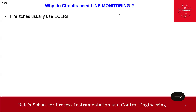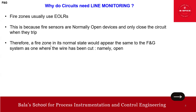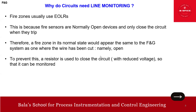Fire zones usually use the end-of-line resistor system because fire sensors are normally open devices — they only close the circuit when they trip. Therefore, a fire zone in its normal state would appear the same to the fire and gas system as one where the wire has been cut — both look like an open circuit. To address this, the resistor is used to close the circuit with a reduced voltage so that it can be monitored.